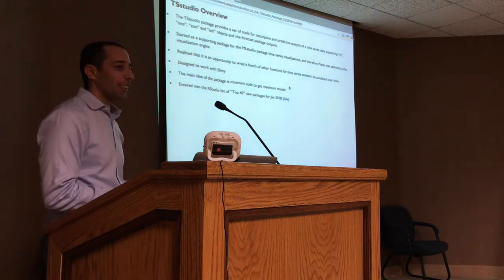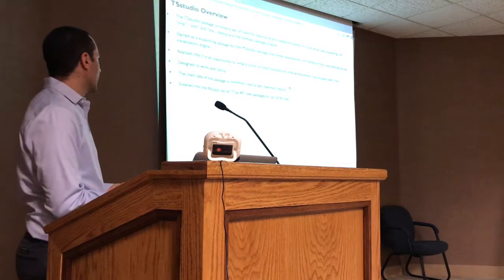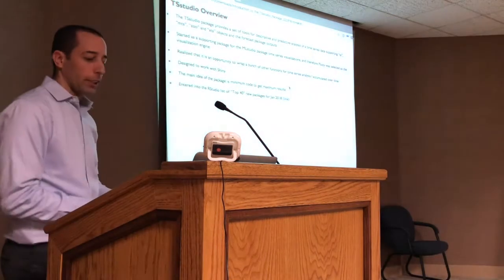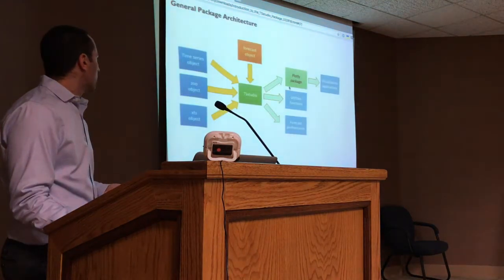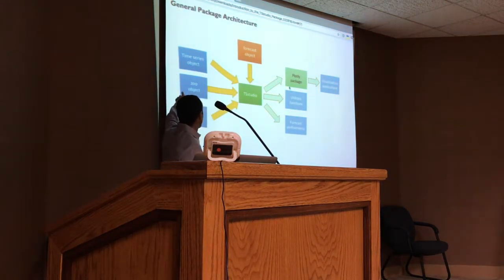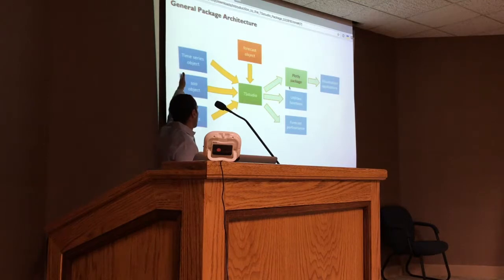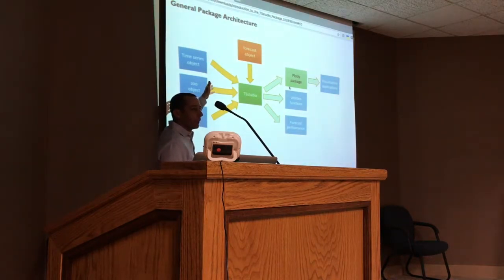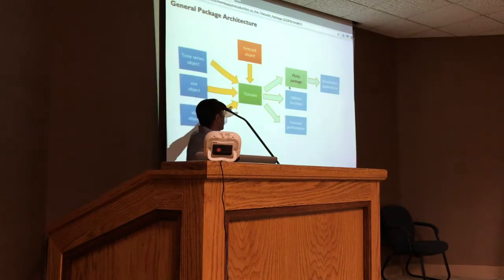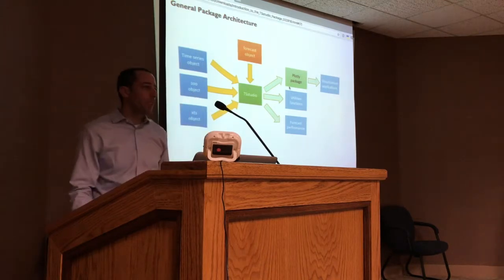The idea is to get maximum results with minimum code - I had functions that were getting big and I wanted to minimize them to save time. Last week it entered a top package list; after each month a blog releases the top 40 new R package releases, and it made the January 18th list. The structure of the package: inputs are time series objects, ZOO or XTS objects, and also forecast objects representing forecasting models. The outputs are utility functions, forecast performance measurement, and visualization - which is the main one at this moment.